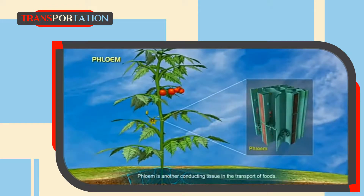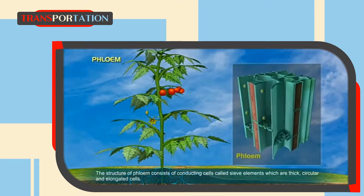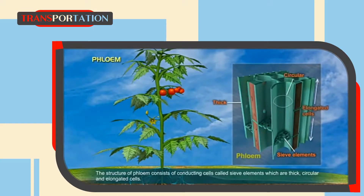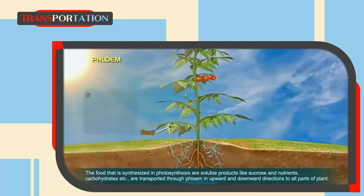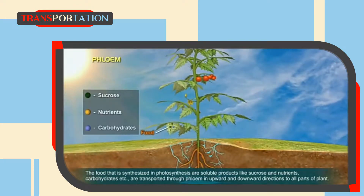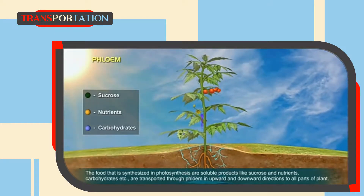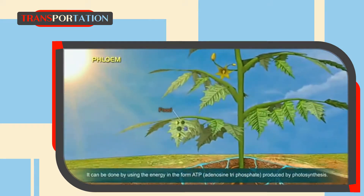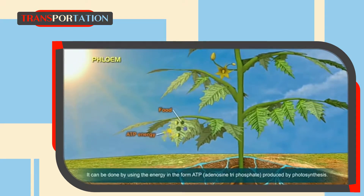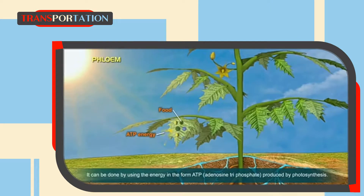Phloem is another conducting tissue involved in the transport of food. The structure of phloem consists of conducting cells called sieve elements, which are thick, circular, and elongated cells. The food synthesized in photosynthesis includes soluble products like sucrose, nutrients, carbohydrates, etc., which are transported through phloem in upward and downward directions to all parts of the plant. The transport of soluble products of photosynthesis is called translocation, and it is done using energy in the form of ATP (adenosine triphosphate) produced by photosynthesis.